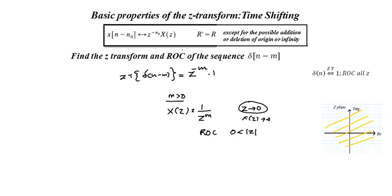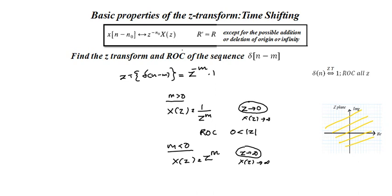Another possibility: if M is less than 0, the exponent becomes positive, so X(Z) becomes Z raised to a positive power. In that case, if Z tends to infinity, X(Z) goes to infinity, so we cannot consider Z equal to infinity. For M less than 0, the ROC is the entire Z-plane but modulus of Z must be less than infinity — not equal to infinity. This completes the analysis of δ(N minus M).